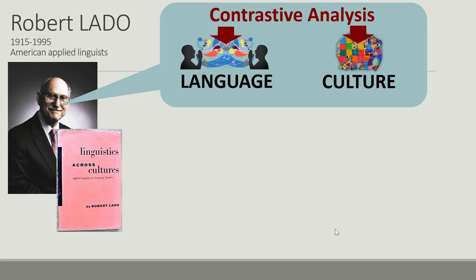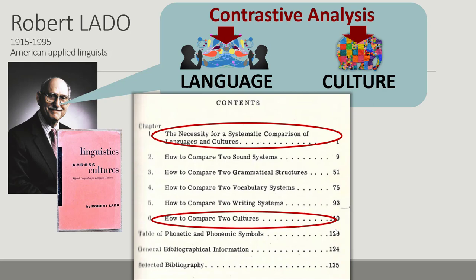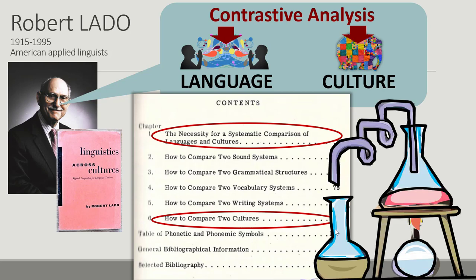The title of the first theoretical chapter of Lado's book is 'The Necessity for a Systematic Comparison of Languages and Cultures.' Four following chapters explain how to compare two different sound systems, grammatical structures, vocabulary systems, and writing systems, while the final chapter explains how to compare two cultures. Robert Lado believed that language education should be approached in a scientific way, and systematic comparison of first and second languages and cultures was the scientific tool he suggested for efficiently teaching both language and culture.